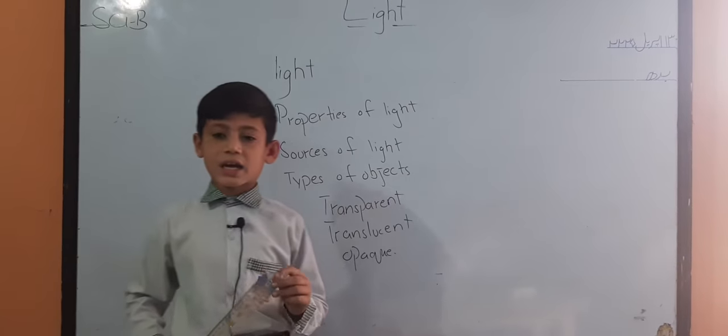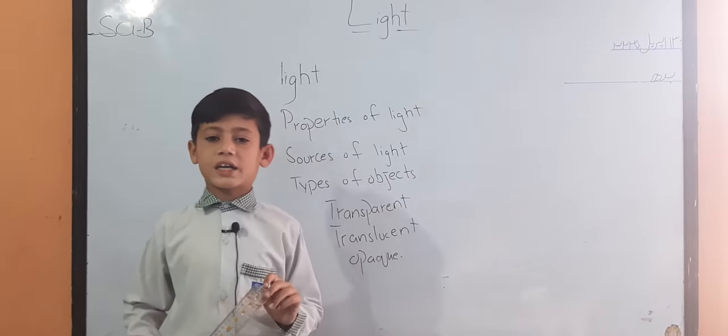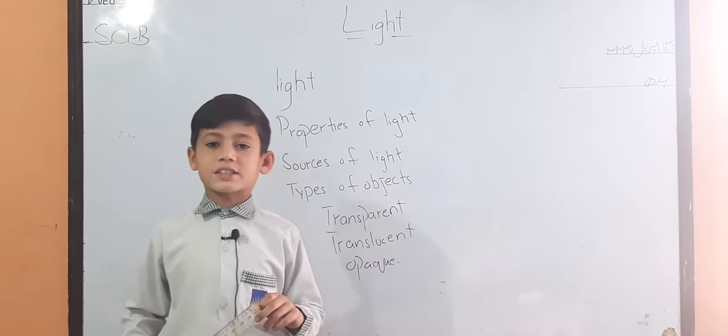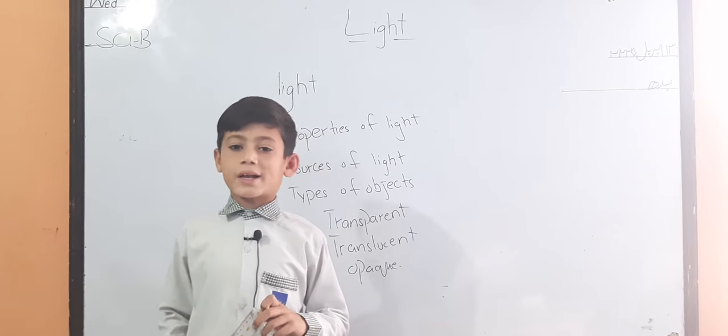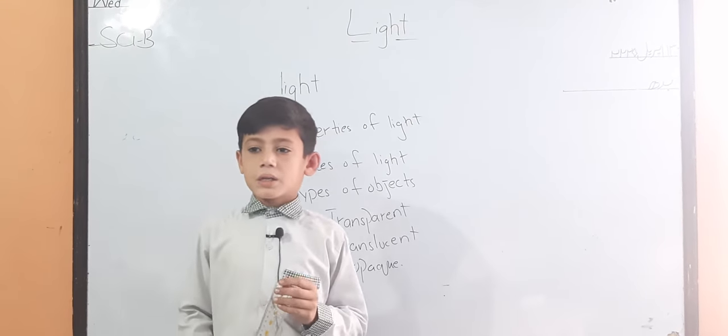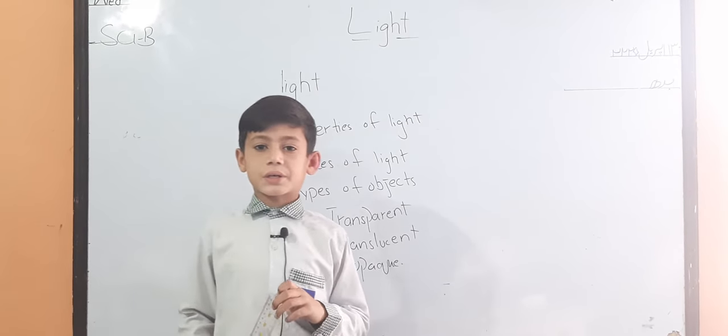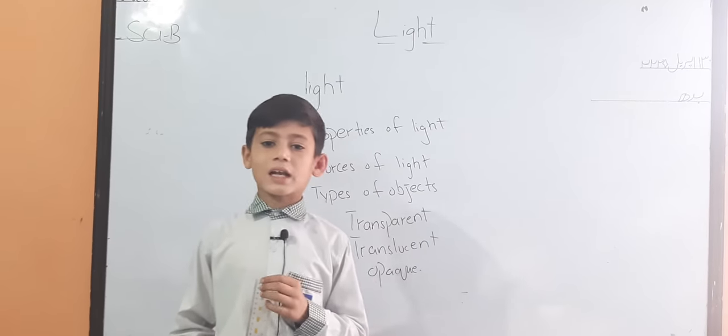Sources of light. There are two sources of light: artificial source and natural source. Artificial source made by light human. For example, light by candle door.